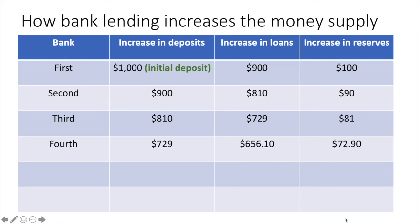The fourth time, the $729 becomes a deposit of which $656.10 is issued in loans and $72.90 is kept in reserves. If we continue this process, we will eventually see a total increase in deposits of $10,000, an increase in loans of $9,000, and an increase in reserves of $1,000.